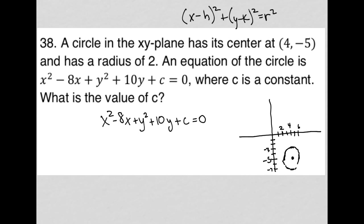This is actually very interesting. I have x² - 8x. I complete the square by taking half of 8, which is 4, then I square it, which is 16, and I add that. I also have y² + 10y. I take half of 10, which is 5, then I square it, which is 25, and I add that.